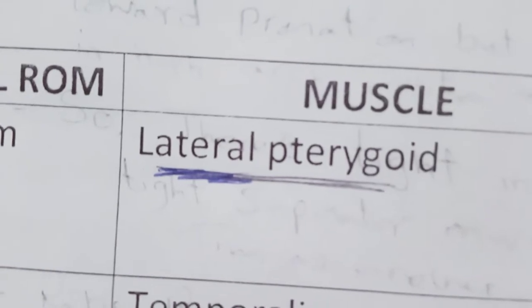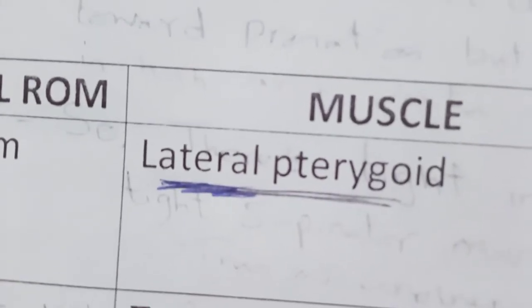Protrusion occurs when the posterior disc slides anteriorly. Lateral excursion of the ipsilateral TMJ involves spinning in place with the contralateral TMJ sliding anteriorly.